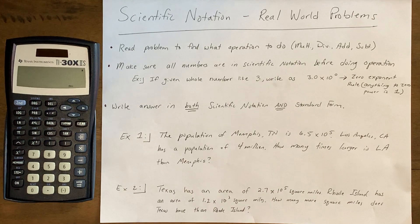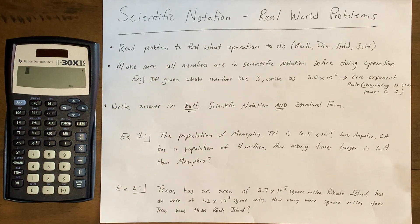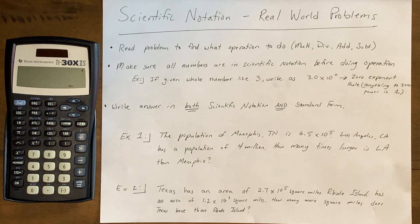Example 1: the population of Memphis, Tennessee is 6.5 times 10 to the 5th. Los Angeles, California has a population of 4 million. How many times larger is LA than Memphis? A key word here is "times" — how many times larger? Usually when we hear that word we think multiplication, right? Times table, 5 times 2. But in this case, the way they're asking the question is actually a bit tricky.